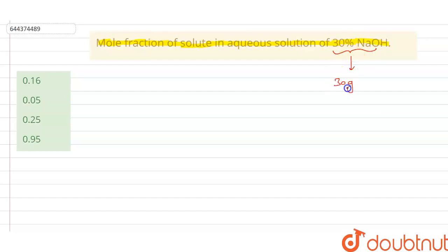It means 30 gram of NaOH is present in 100 gram of solution. The meaning of 30% NaOH is 30 gram of NaOH acting as solute present in 100 gram of solution.